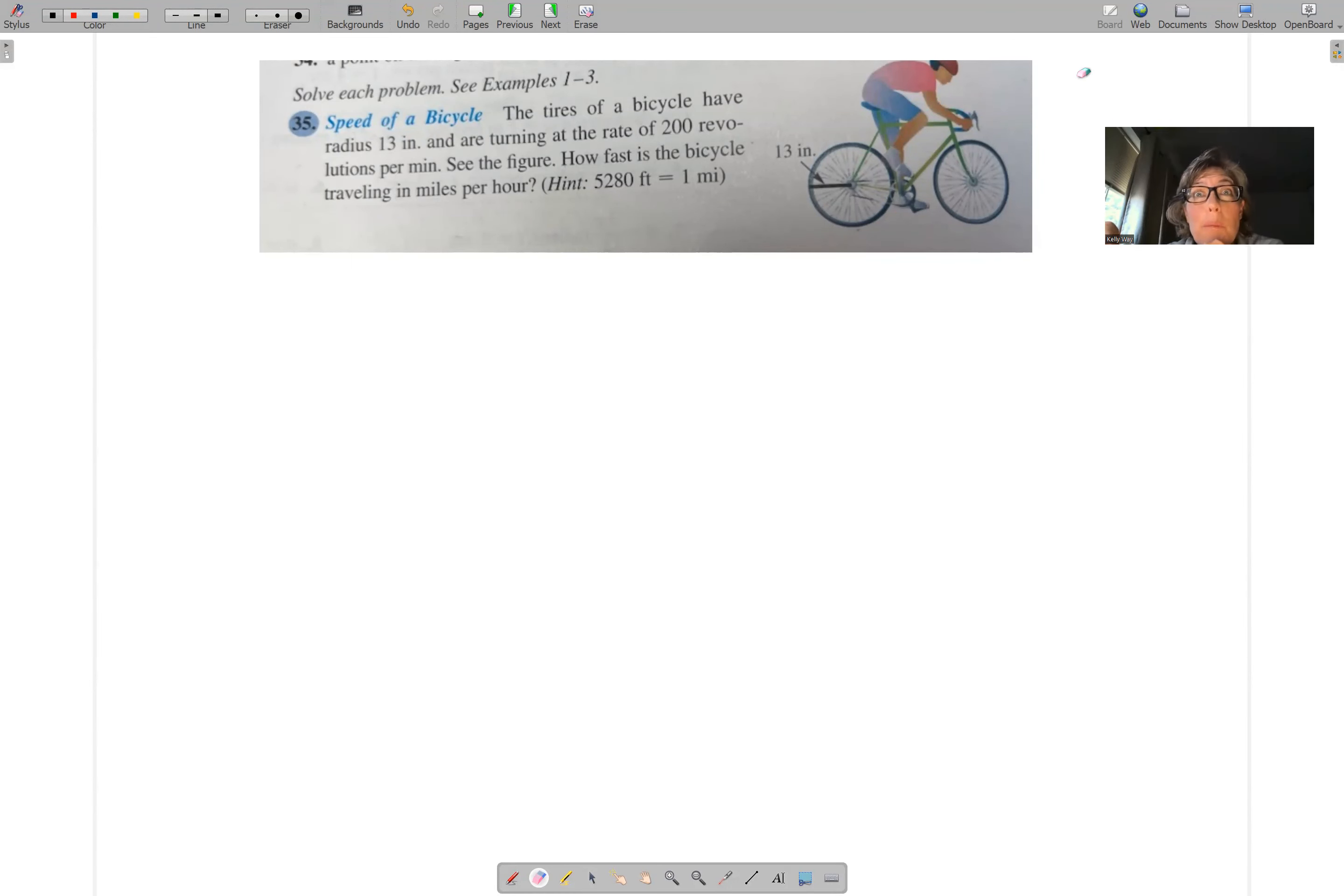This is an explanation for problem number 35. The speed of the bicycle, the tires of a bicycle, have a radius of 13 inches and are turning at a rate of 200 revolutions per minute. See the figure. How fast is the bicycle traveling in miles per hour? And of course, they give you a hint here.